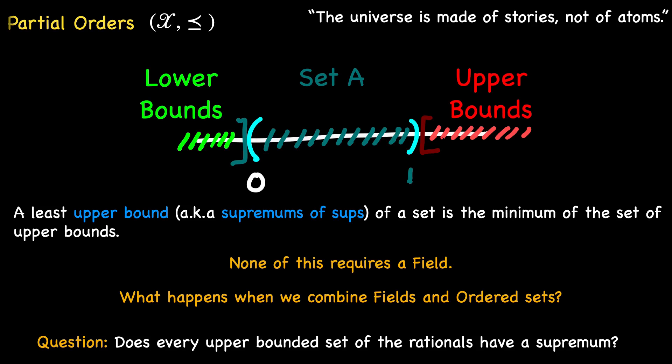Unlocking the realms of upper bounds, lower bounds, maximums, minimums, supremums, and infimums merely requires a partial order. Yet, in our quest to uniquely delineate the landscape of rational numbers, let's explore the integrated dance when the order relationship intertwines with the operations of a field.